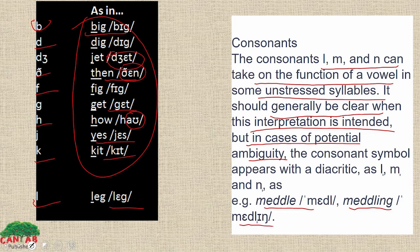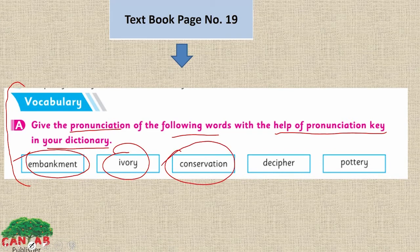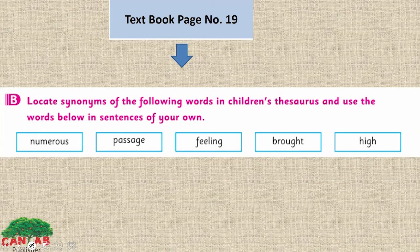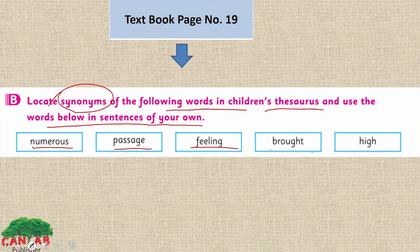So what you need to do: open your dictionary and find the pronunciation of these words, then write the correct pronunciation of each word. Now look at section B here — locate synonyms of the following words in a children's thesaurus and use the words below in your own sentences. Thesaurus means dictionary, and synonyms are words which have the same meaning. Find the words with the same meaning and also use these words in your own sentences.